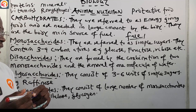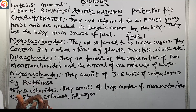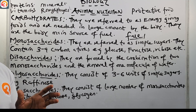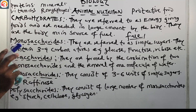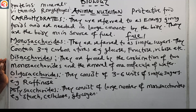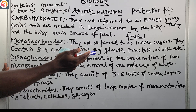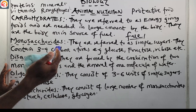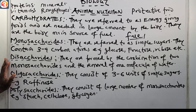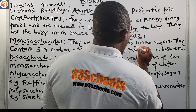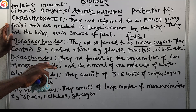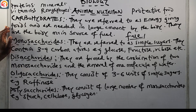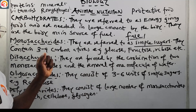Majorly, there are four types of carbohydrates. First are monosaccharides — called simple sugars. They contain three to nine carbon atoms. Examples include glucose, fructose, and ribose. You could be asked which type of carbohydrate is called simple sugars — the correct answer is monosaccharides.